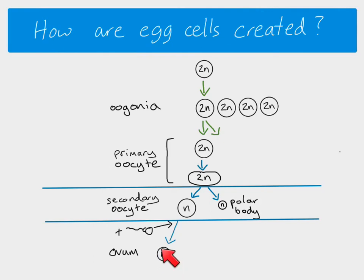Obviously, this ovum here, so this is haploid, but because fertilisation has happened, it won't stay haploid for very long. As soon as those chromosomes from the sperm join the chromosomes from the ovum, this ovum will then become a diploid zygote.